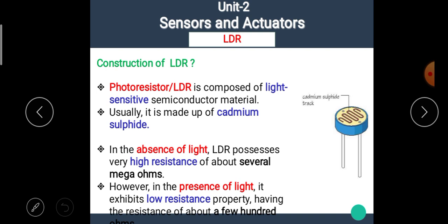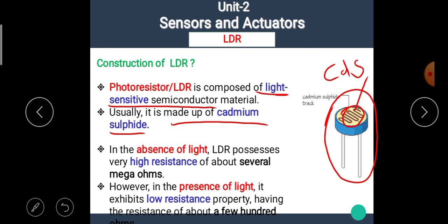The photo resistor or LDR is composed of light sensitive semiconductor material. Usually, it is made up of cadmium sulfide. This is the actual LDR in which this material is light sensitive and generally, this is made up of cadmium sulfide material. In the absence of light, that means in dark conditions, LDR possesses very high resistance of about several mega ohms.